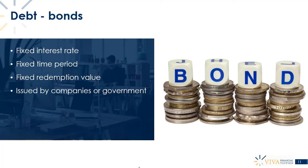Bonds are typically not issued by banks — they're issued by other companies or the government. You can get funds from lots of different places; don't think you can only get funds from banks. Anyone can provide funds as long as they have a reasonable track record and are reliable. Bonds are redeemable, meaning repayable, so if you issue a bond and receive cash, you will have to pay that cash back at a later date. A key advantage of bonds over bank loans is that bonds can be marketable — you can buy and sell them throughout their life, so there's an actual market for acquiring and selling bonds.